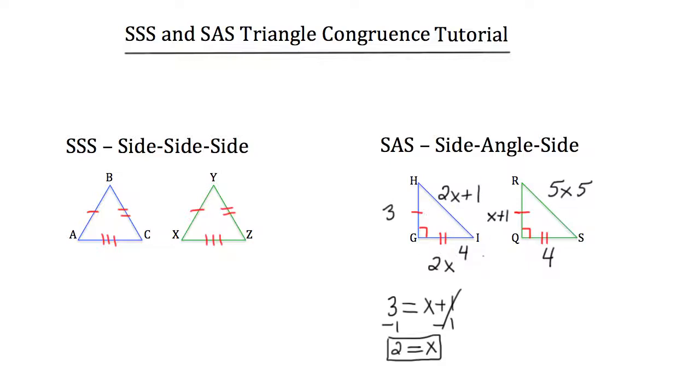Let's take a look at the two hypotenuses. HI is 2x plus 1. Well we know that x is 2, so it's really 2 times 2 plus 1. 2 times 2 is 4, plus 1 is 5, so this hypotenuse must be 5.